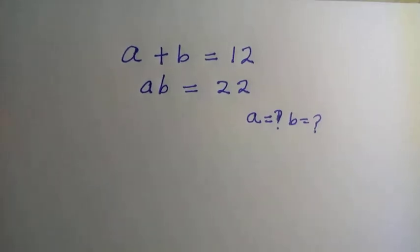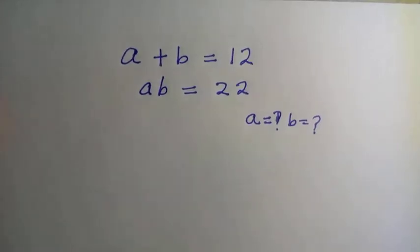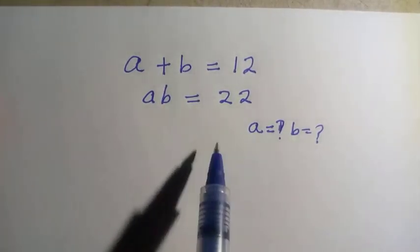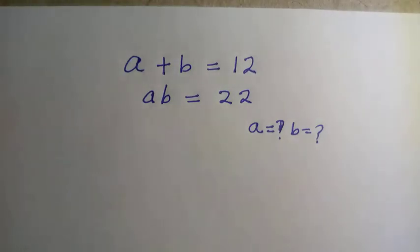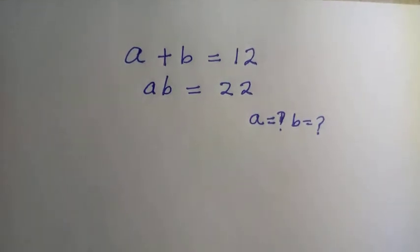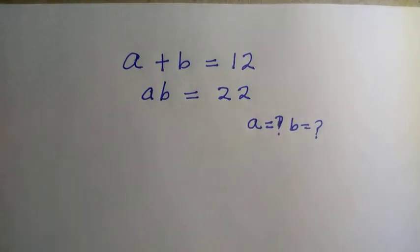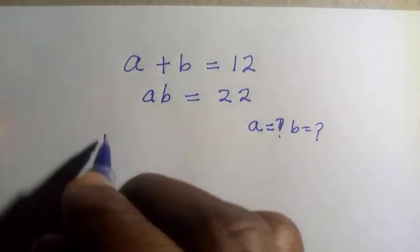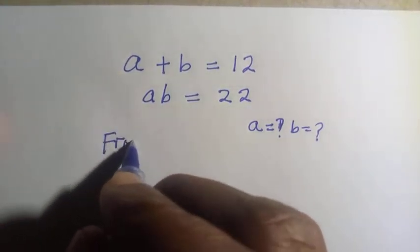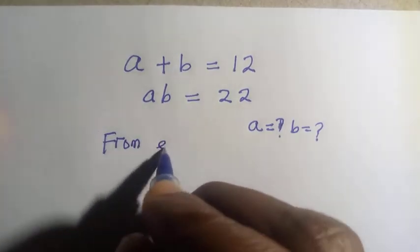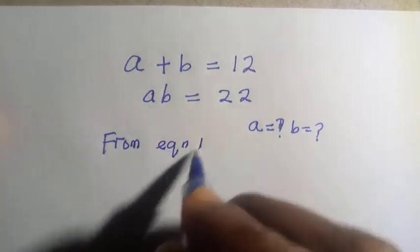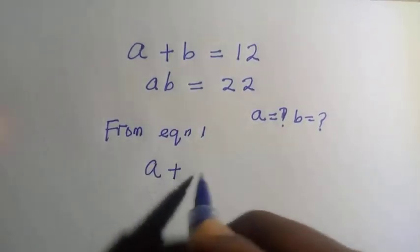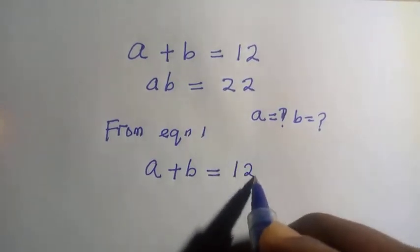Good day viewers. In this video we want to be solving for A and B where we have A plus B equals 12 and AB equals 22. To get the value of A and B in this problem, we consider the first one as equation 1 and the second one as equation 2. Then we work from equation 1, which is A plus B equals 12.